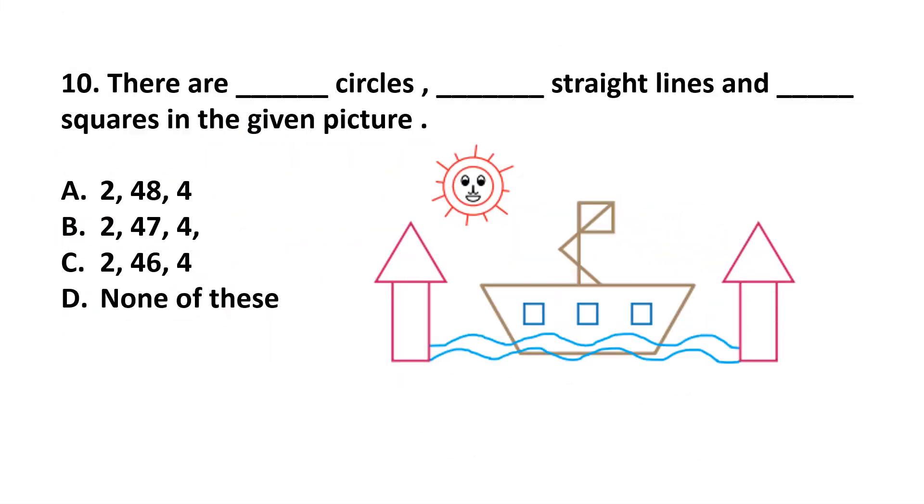Question number 10. There are dash circles, dash straight lines and dash squares in the given picture. Kids, look at the options and we can see that this number of circles are given same in all options. Same as in number of squares also given same. So, we will count number of straight lines only.